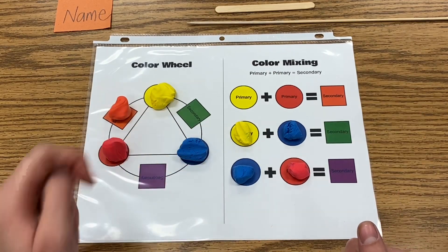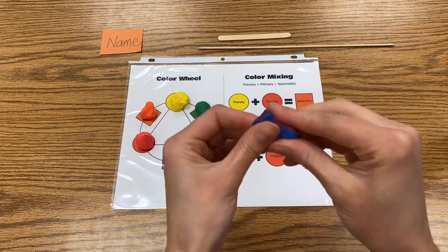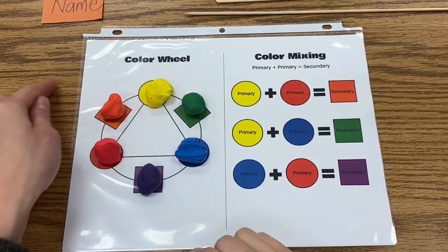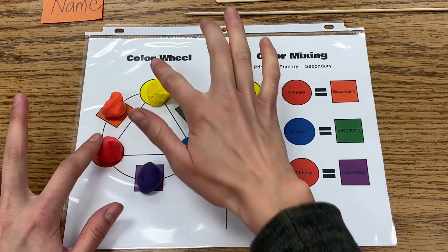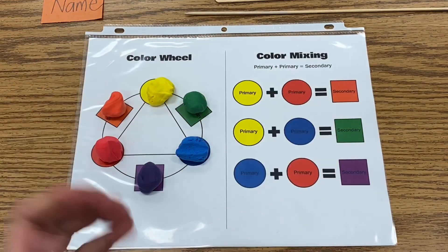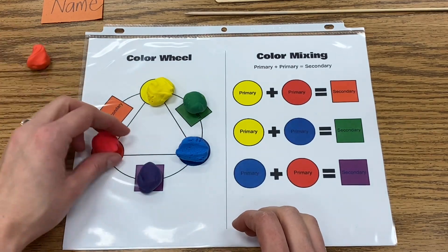You're going to continue mixing your other primary colors together until you have a complete color wheel. Once you have completed your color wheel and you've used your primary colors to mix your secondary colors, then we're going to turn these model magic pieces into beads.